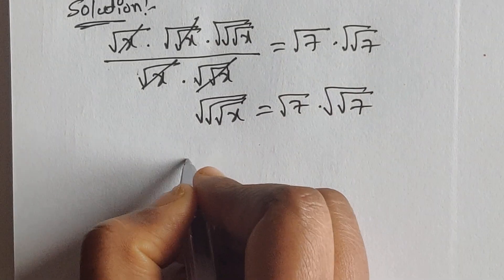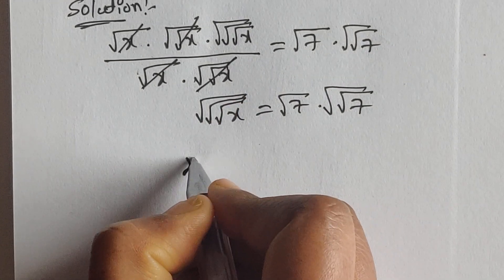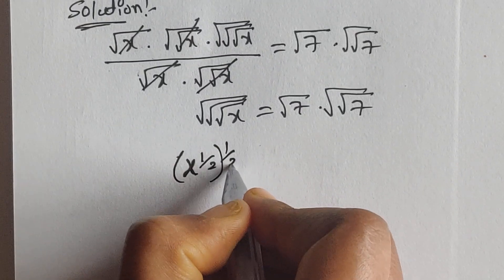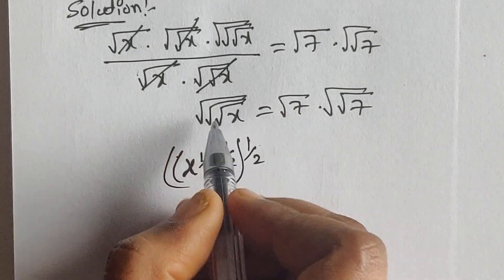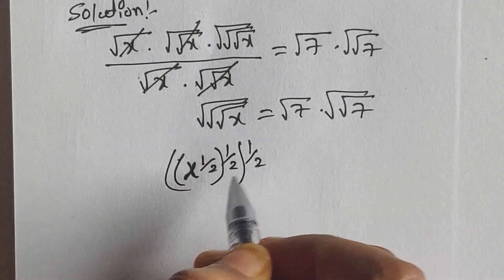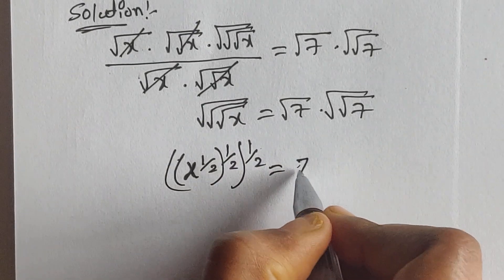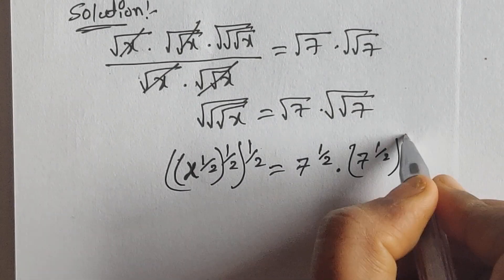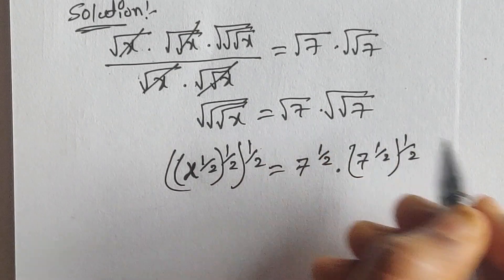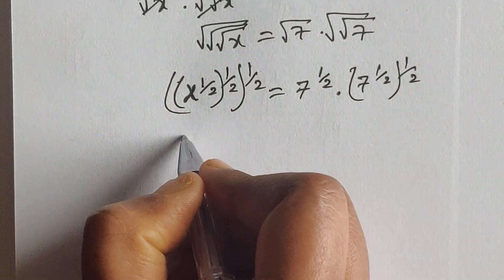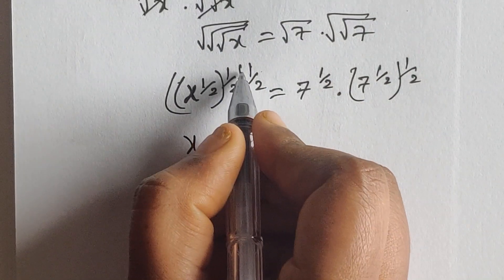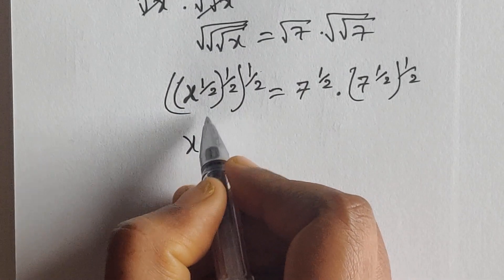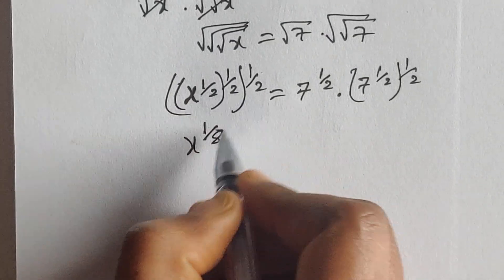Now x to the power of 1/2, whole to the power of 1/2, whole to the power of 1/2 — because it has 3 square roots — equals 7 to the power of 1/2 times 7 to the power of 1/2, whole to the power of 1/2 — because the right side has 2 square roots. So now x to the power of 1/2 × 1/2 × 1/2 equals 1/8, so x to the power of 1/8.